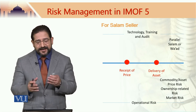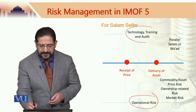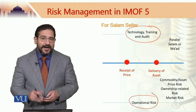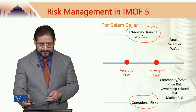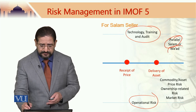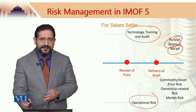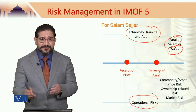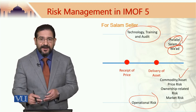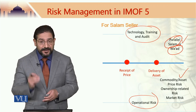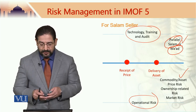From a Salam seller's viewpoint, operational risks are there as well, which can be mitigated with the help of technology, training, and audit, as mentioned previously. Parallel Salam and Wa'd are important risk mitigation tools in the case of a Salam structure as a mode of finance. Commodity asset price risk can be taken care of by parallel Salam, its delivery can be managed, and market risk can be taken care of by parallel Salam or Wa'd.